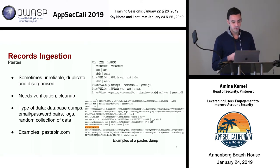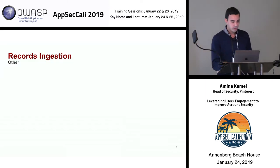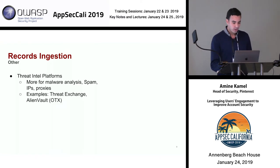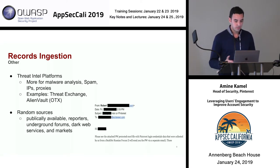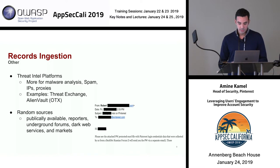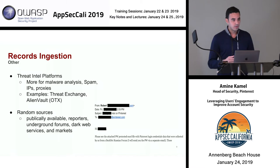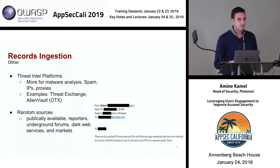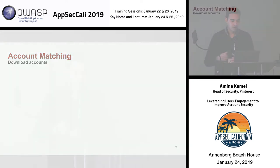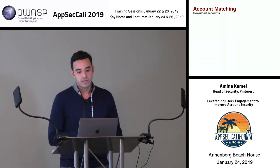Other sources include threat intel platforms, which in my experience tend to focus more on malware analysis, spam, IP reputation, and known bad proxies — examples being Threat Exchange from Facebook or OTX from AlienVault. There are also random sources: reporters can reach out to you, underground forums, dark web services and markets. I had an example where a reporter claimed he had access to Pinterest login credentials. It's valuable to follow up with these, but it requires a lot of effort to verify.